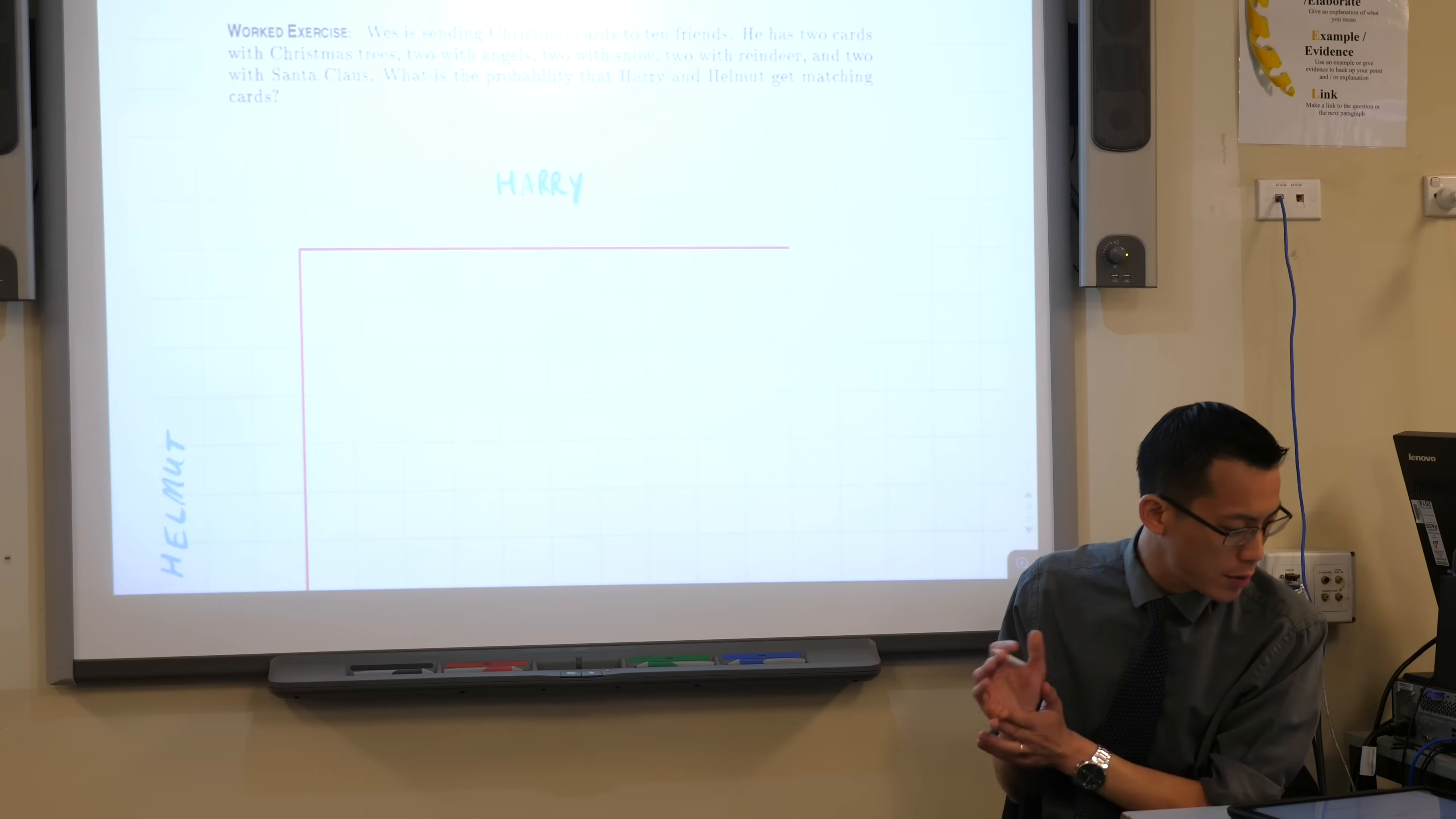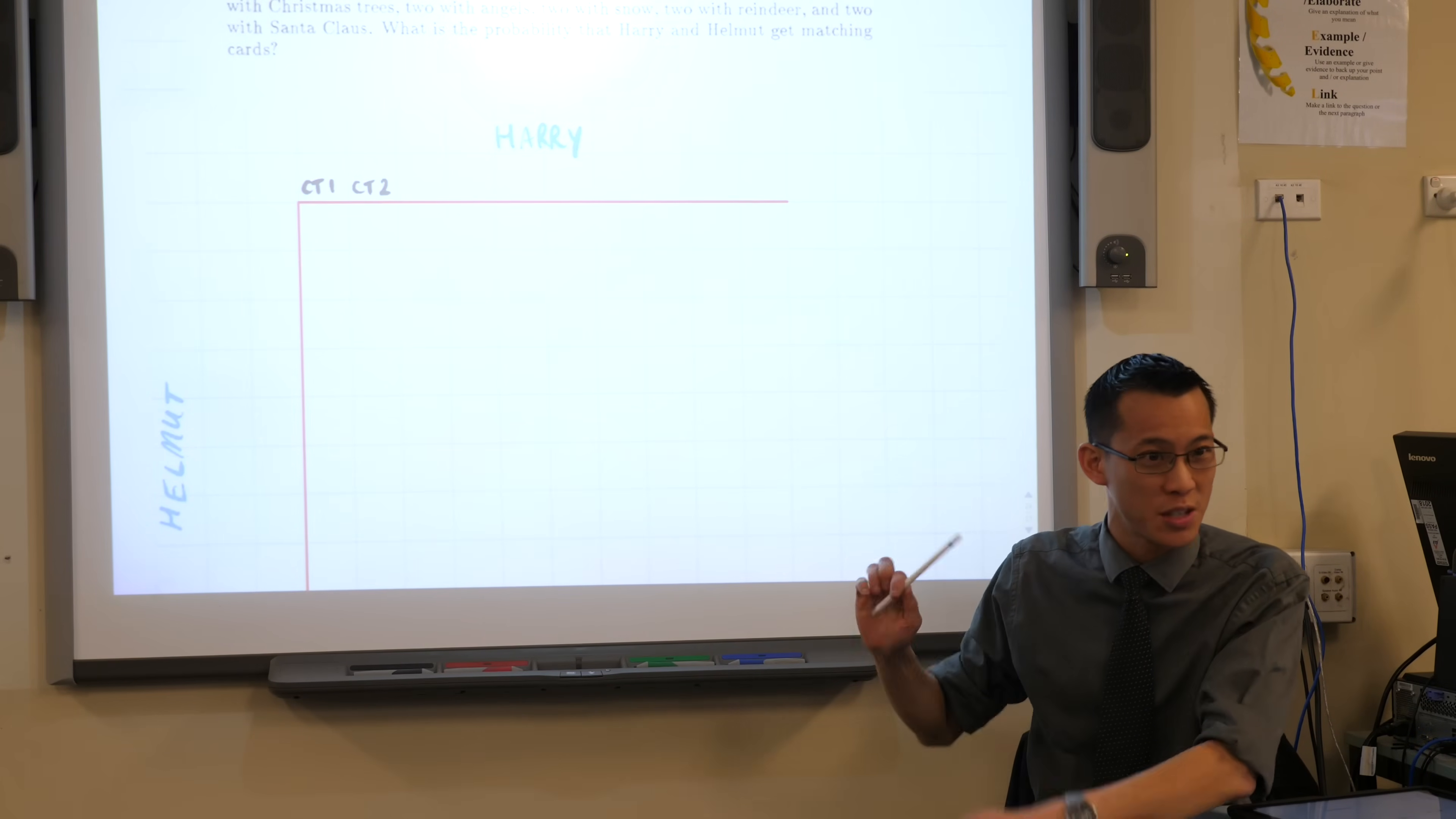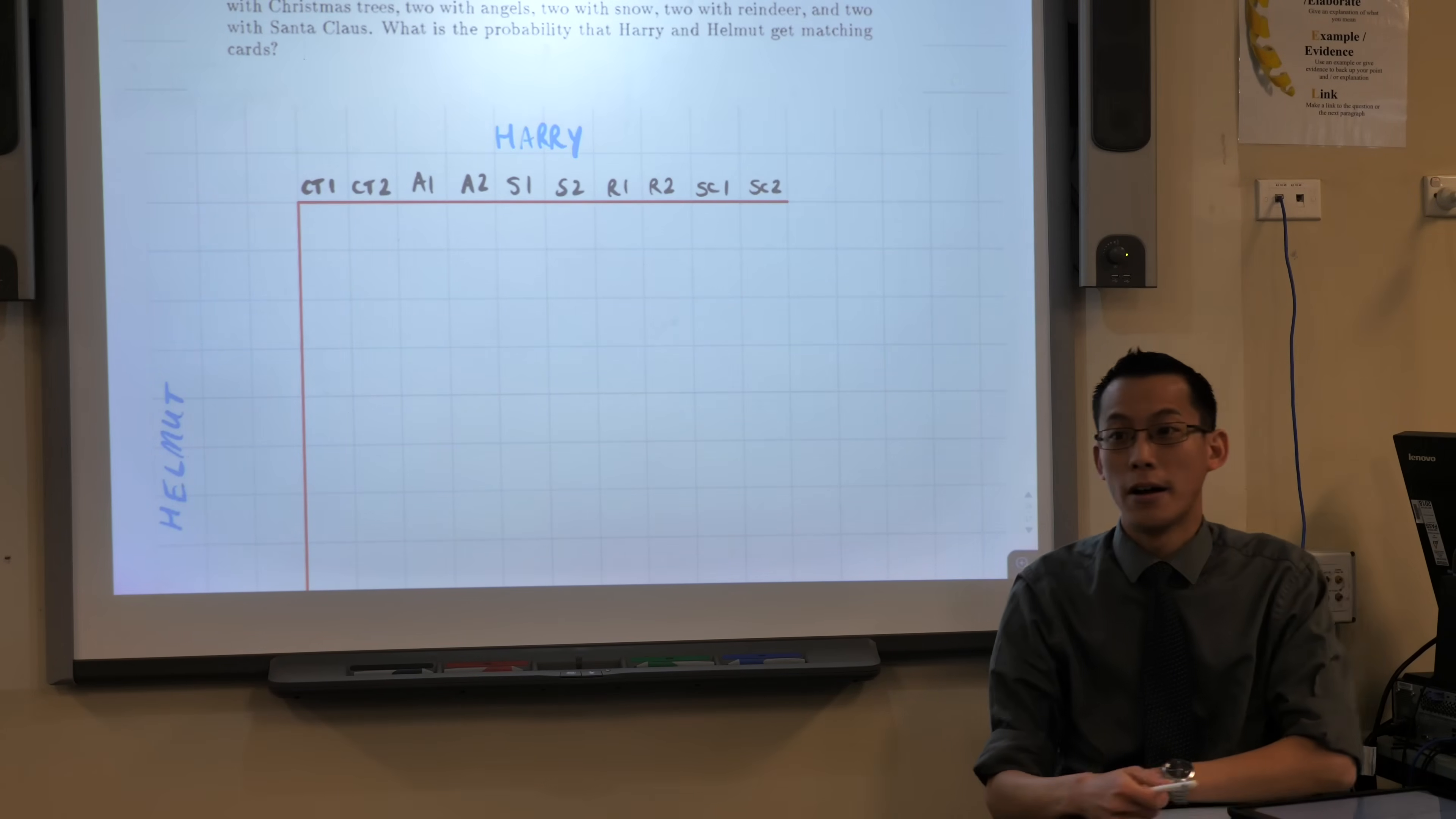If I go up and have a look at the designs here, there are two cards with Christmas trees. Let's call them Christmas tree one and Christmas tree two. I'm labelling them as different because two people can't get the same card. Christmas tree one and two, Angel one and two, Snow one and two, Reindeer one and two, Santa Claus one and two.